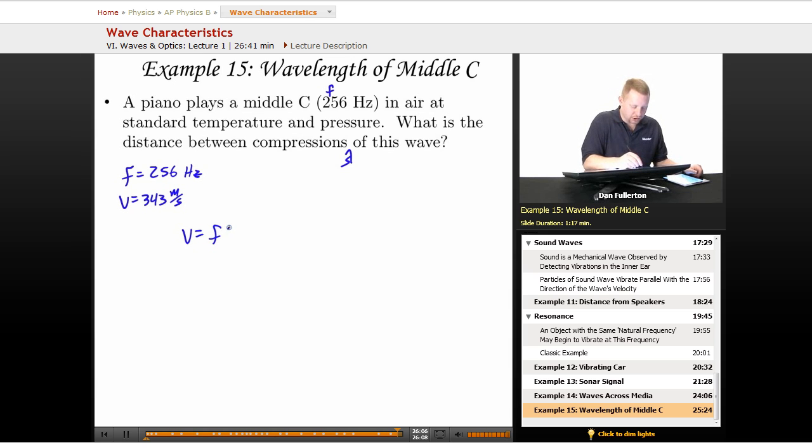We can use our wave equation, V equals F lambda. Therefore, wavelength is equal to velocity divided by frequency, or 343 meters per second divided by 256 hertz. Therefore, wavelength is going to equal 1.34 meters.